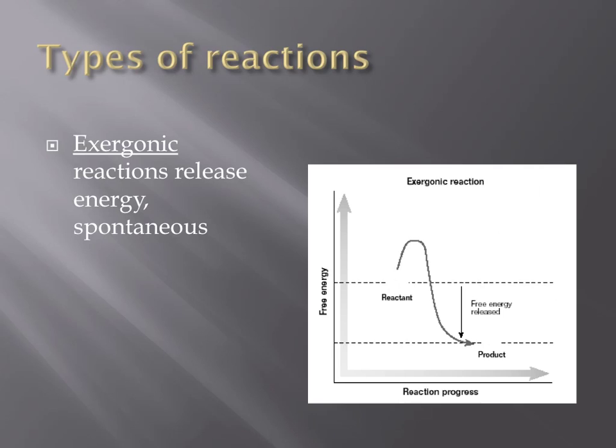These reactions are spontaneous, meaning that no outside energy is needed for them to occur. They happen naturally, without any outside help. The image to the right shows an exergonic reaction. What this image shows is that the free energy is greater in the reactants on the left side of the graphic than on the products on the right side of the graphic.